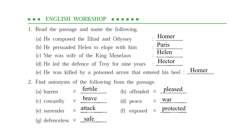Third — she was wife of King Menelaus. The answer is Helen. Fourth — he laid the defense of Troy for 9 years. The answer is Hector. Fifth — he was killed by a poisoned arrow that entered his heel. The answer is Achilles — not Homer, Achilles.